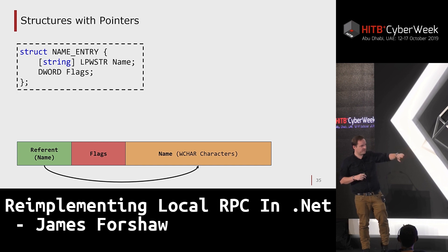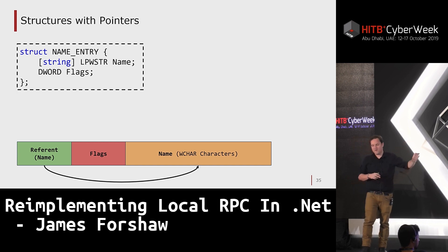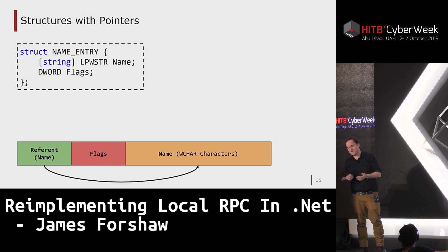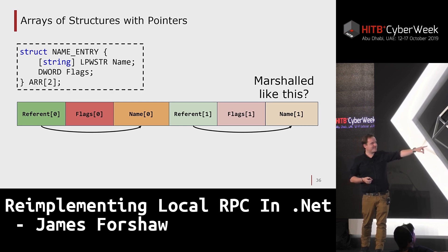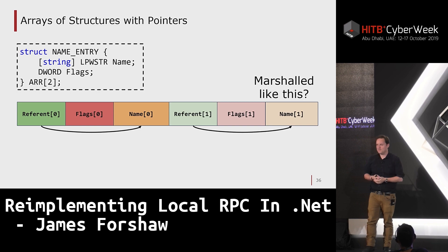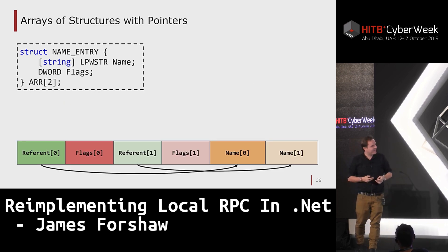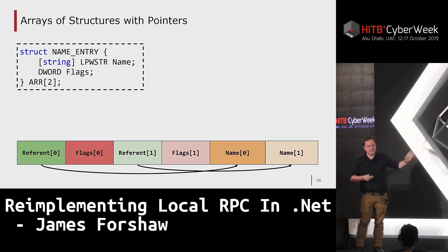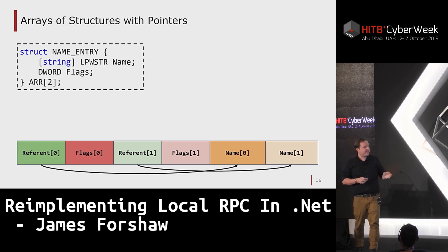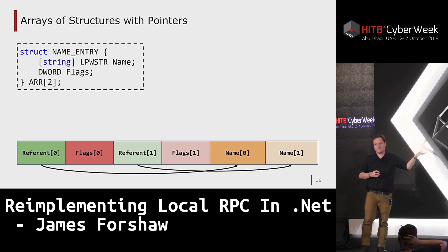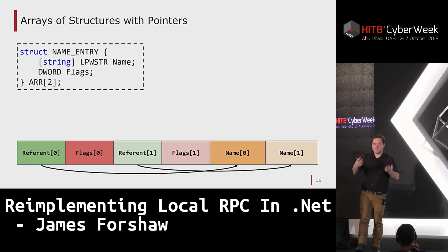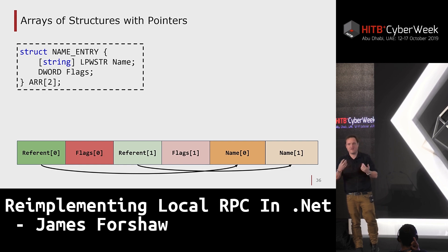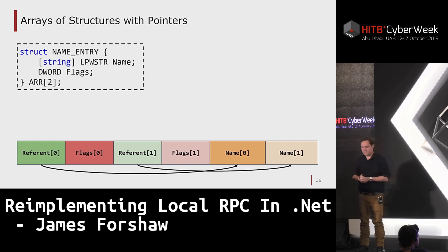So you have a referent as a pseudo-pointer to the name data, then you write the flags, then the name data itself. But for an array of structures it gets more complex: it marshals referent-zero and flags-zero for the first entry, then the referent and flags for the second entry, and only after the entire array is marshalled does it start writing out the referent data — first name, then second name. Coming up with a general solution that actually works without horrible hacks took quite a bit of back-and-forth.